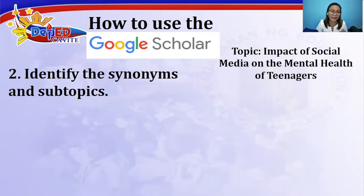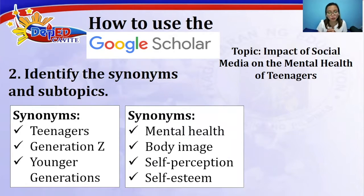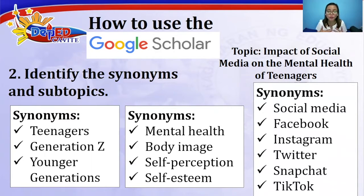Second, identify synonyms and sub-topics. For teenagers, synonyms include Generation Z or the younger generation. For mental health, we can use body image, self-perception, or self-esteem. For social media, there are more specific sub-topics such as Facebook, Instagram, Twitter, Snapchat, or TikTok.